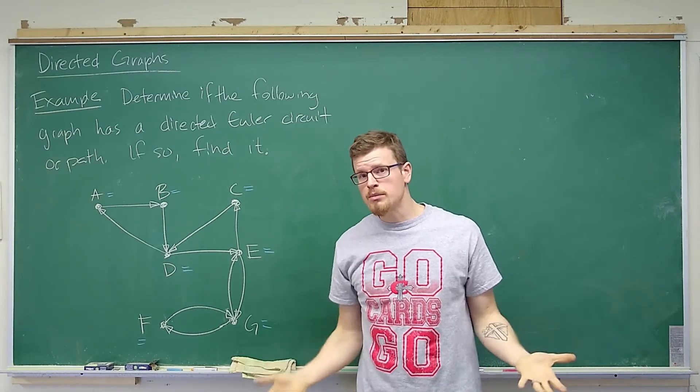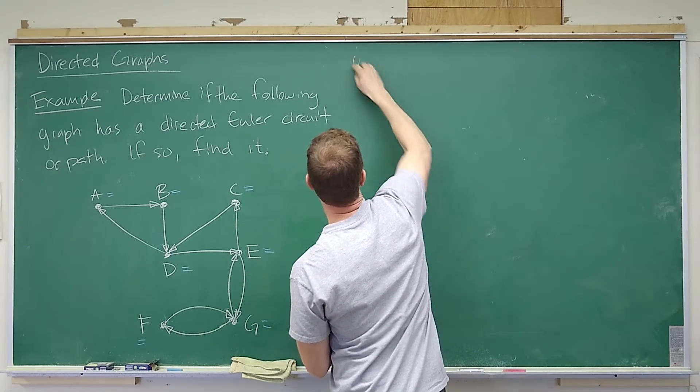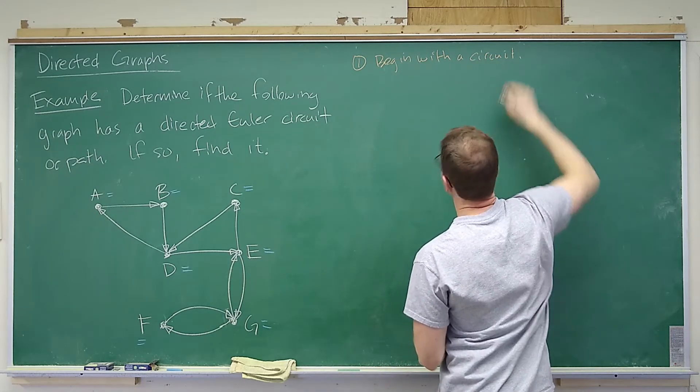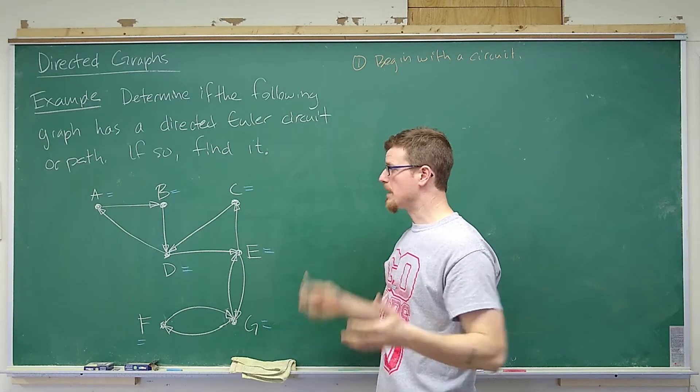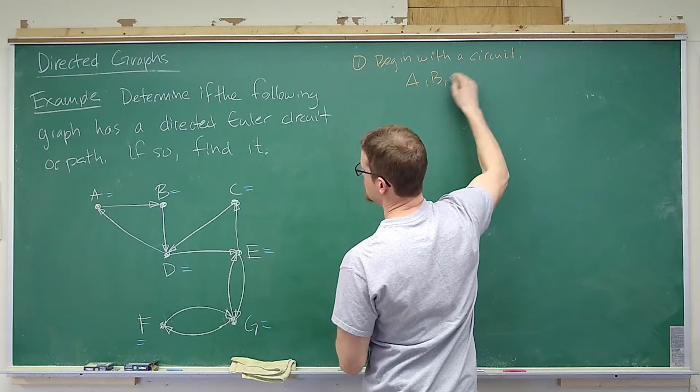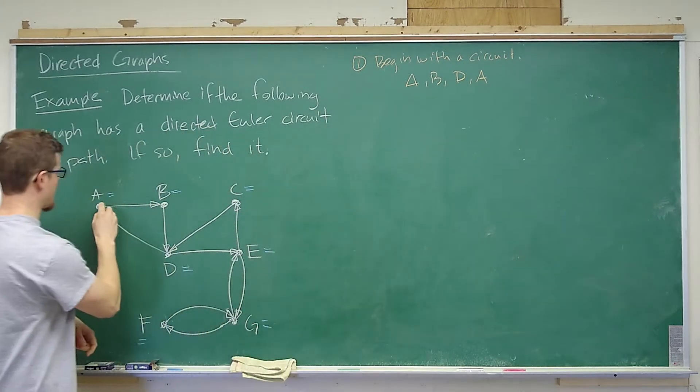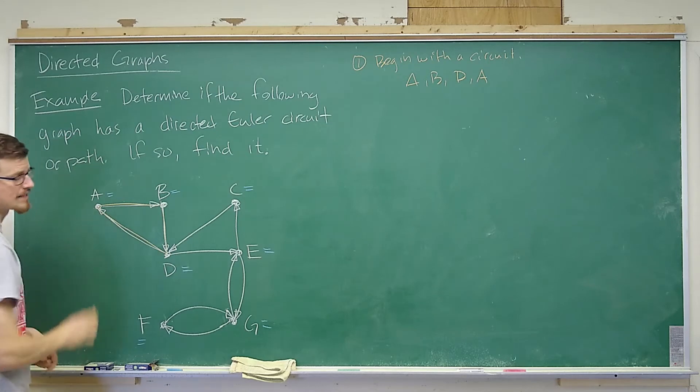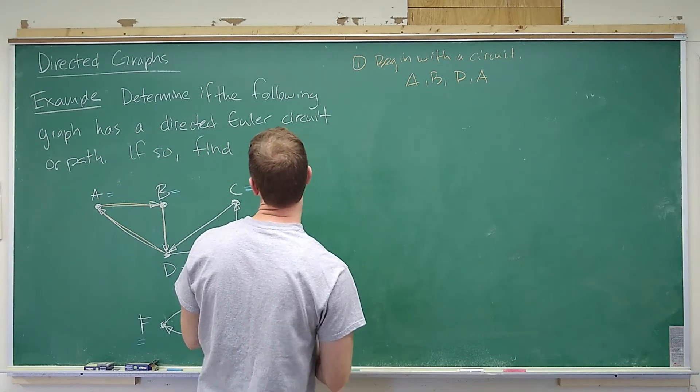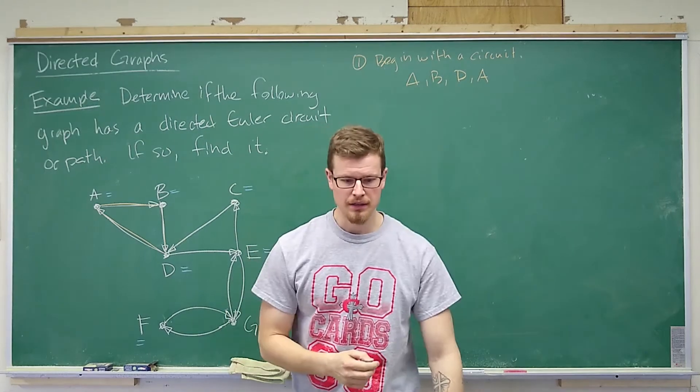We begin by choosing some circuit. It doesn't matter which circuit we choose, but we begin with a circuit. Step one is begin with a circuit. There are many options here. I'm going to start with something relatively basic. I'm going to choose A, B, D, A. So I'm traveling from A to B, B to D, and then D to A. We should keep a tally of the edges.